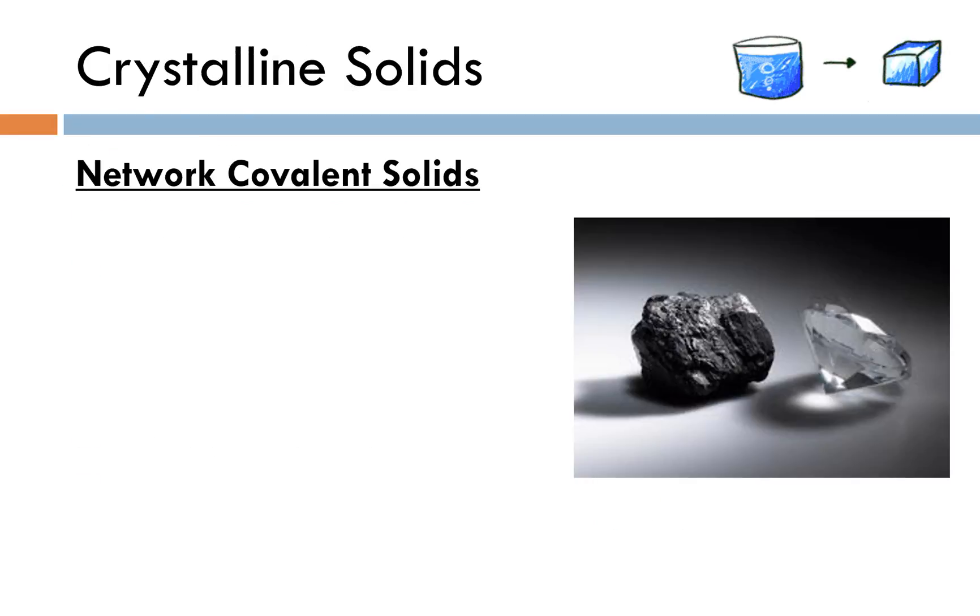The first type are what we call network covalent solids and in the picture we've got graphite and diamond. Both graphite and diamond are pure forms of carbon and in this case carbon is bonded to other carbon atoms in a very large network. Because carbon is bonded to itself, we've got two non-metals bonding together, so we're going to have covalent bonds. These structures are just going to be big huge repeating highly organized carbon atoms bonded together. You should really know graphite and diamond.